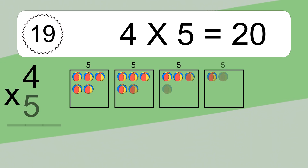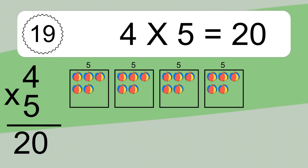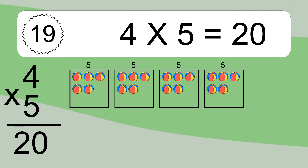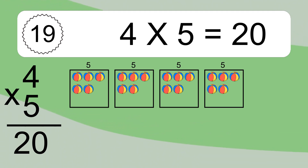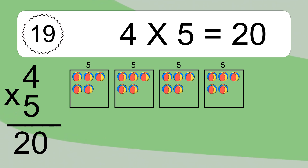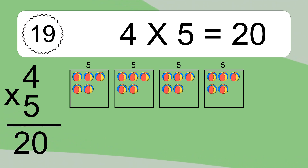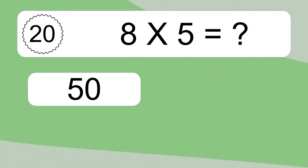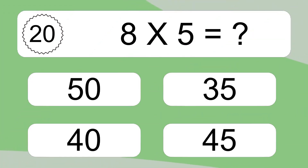4 times 5 equals what? We have 4 boxes, and each box has 5 colorful balls inside. If you count all the balls in all the boxes together, you will have 4 times 5 balls. This equals 20 balls.